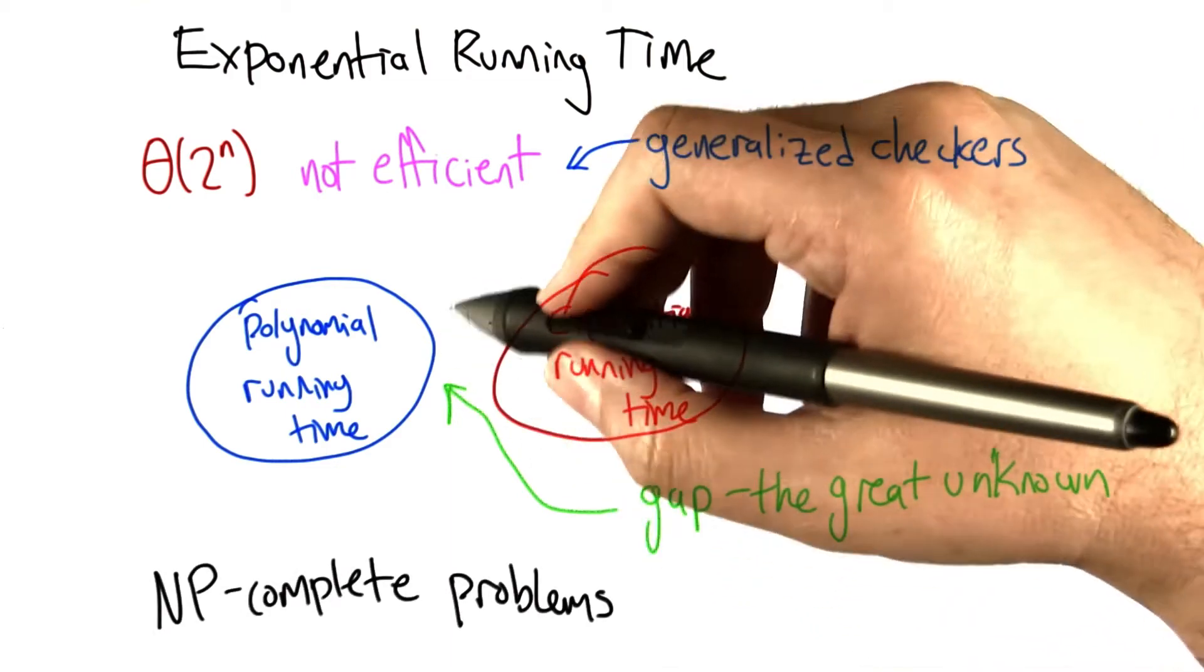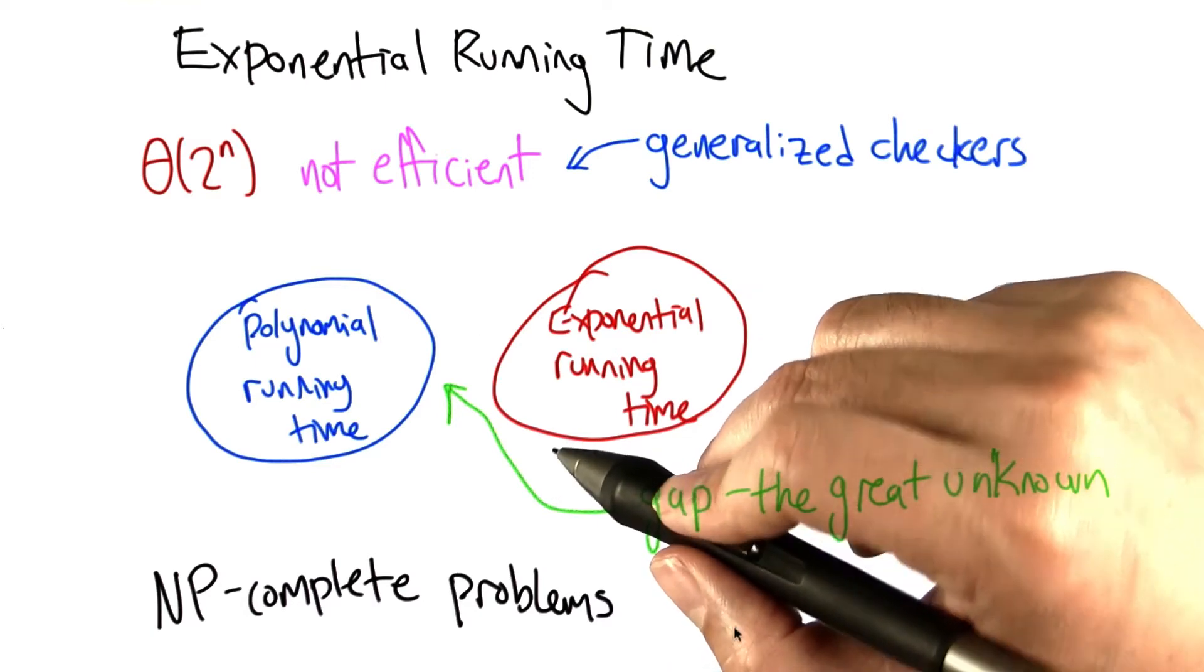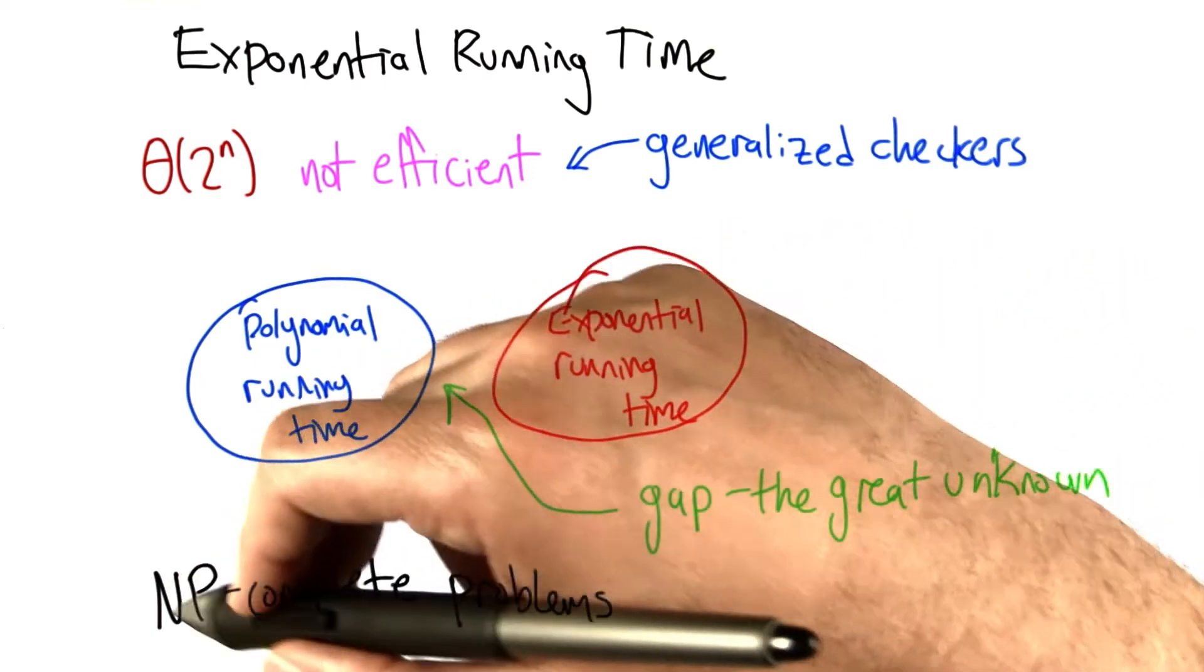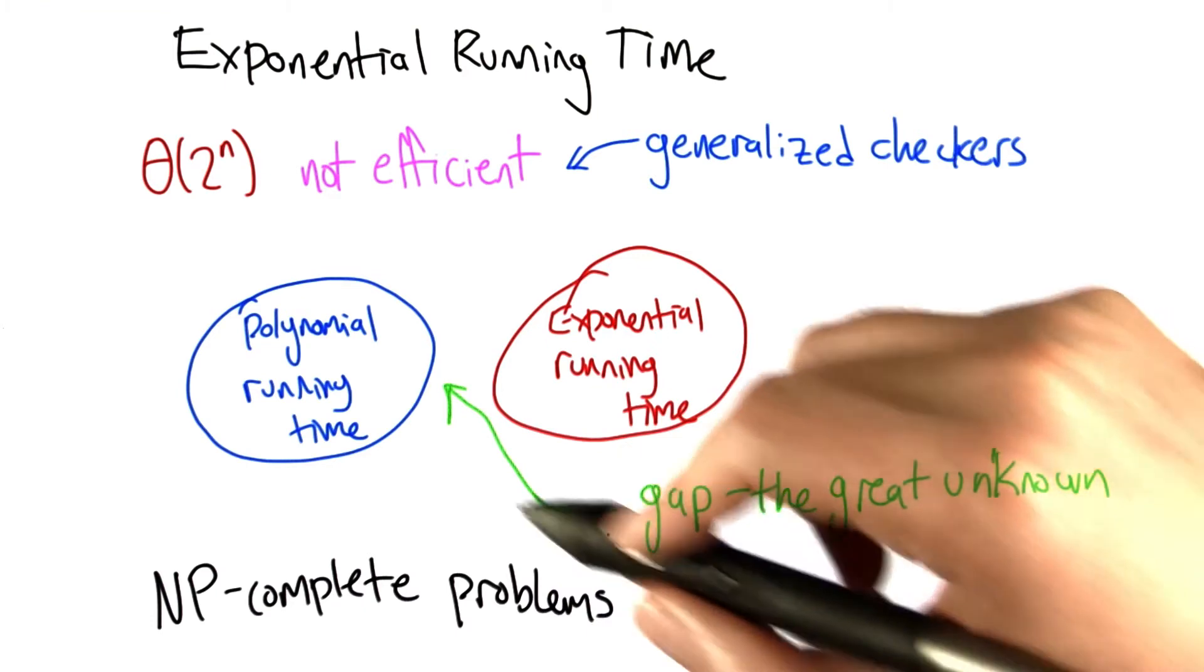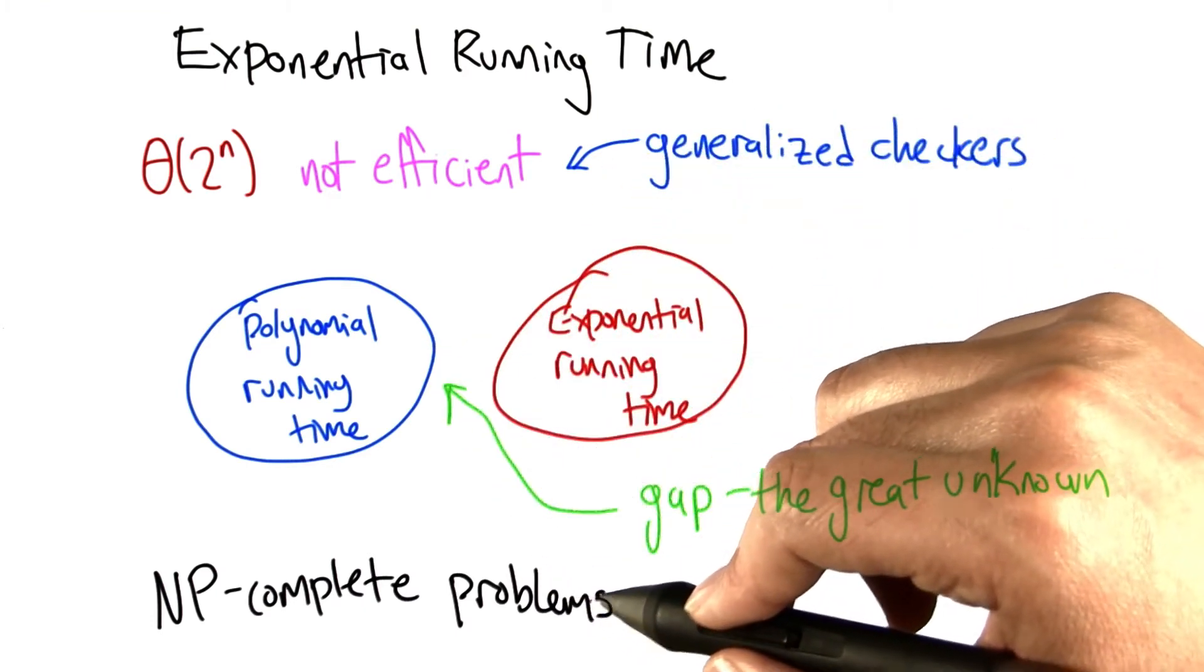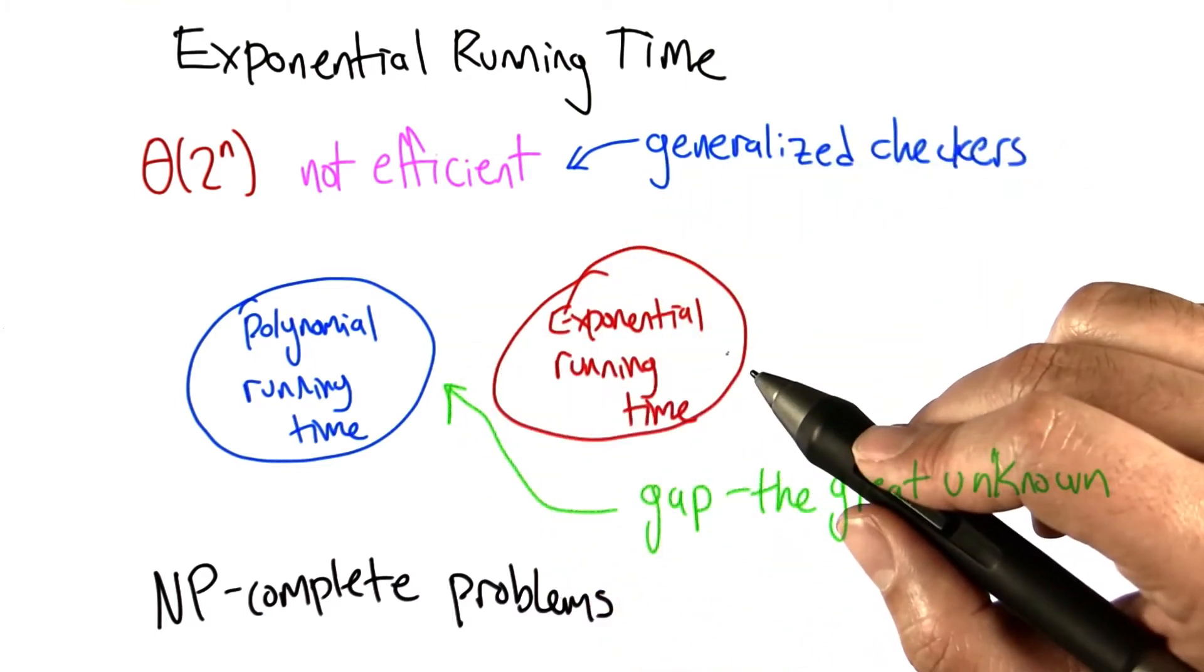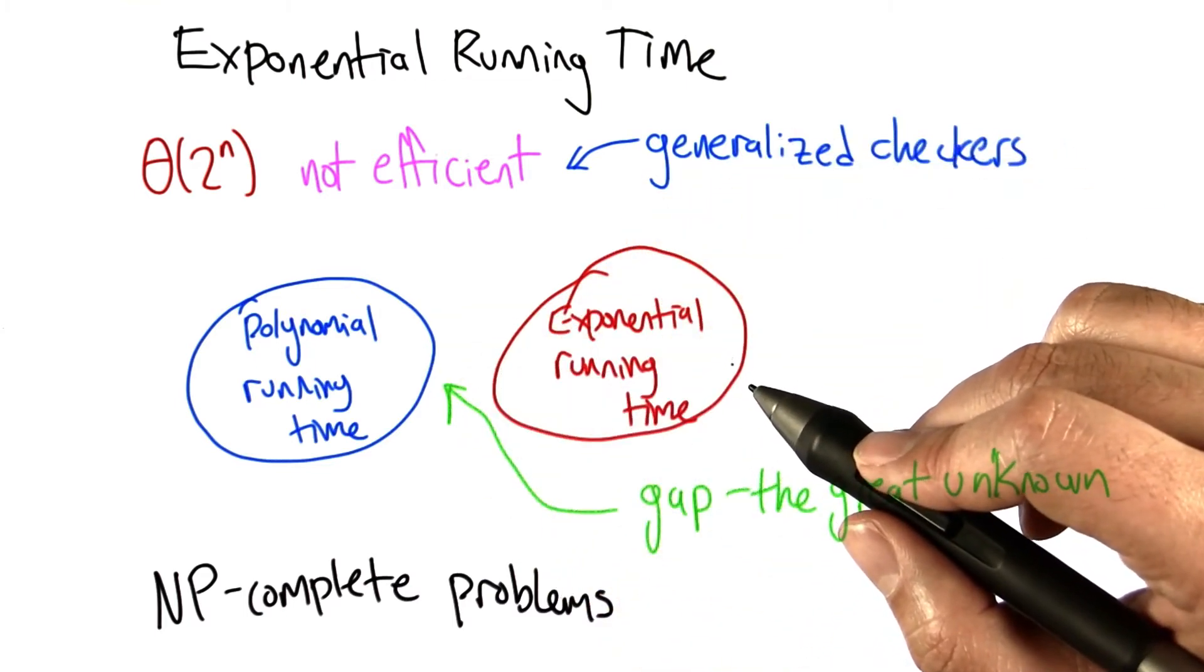There are lots of different classes of problems that live in this gap. But what I'm going to focus on for this unit is a class of problems known as the NP-complete problems. They're not the only problems that fall in here, but they're a very important class and probably the best studied class of problems that fall in this gap where we don't know if they're polynomial or exponential running time.